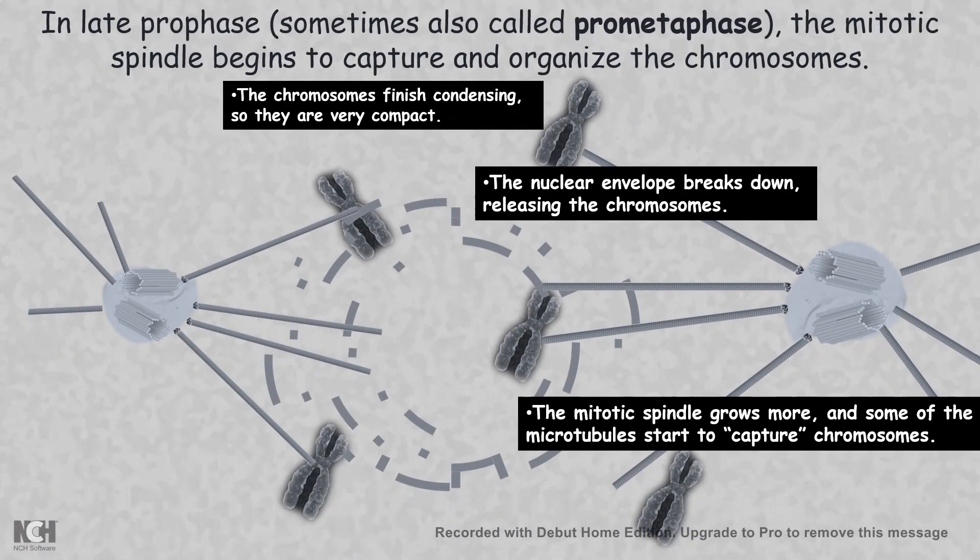At the end of prophase, all the nuclear membrane is broken down, the chromosomes are condensed and totally packaged. There are spindles which are growing and shrinking, trying to capture microtubules.